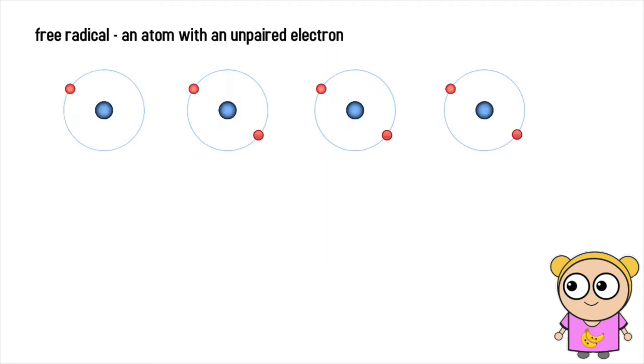Electrons like to be in pairs, so when the free radical forms, it will steal electrons from other molecules to pair up with its own. This in turn destabilizes the other molecules, turning them into free radicals themselves, and creates a chain reaction.